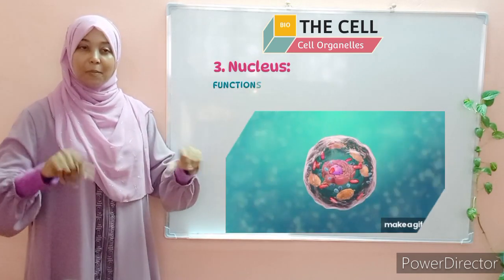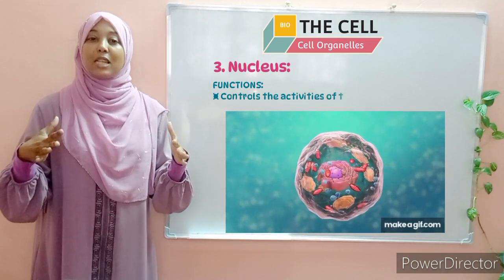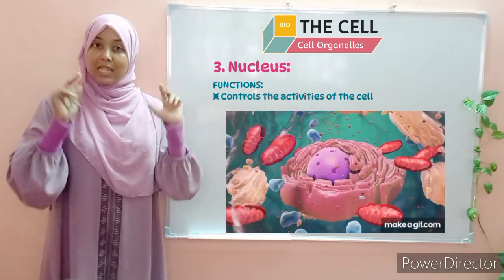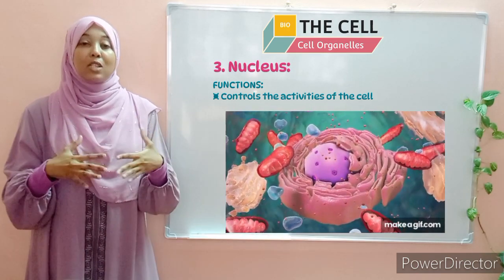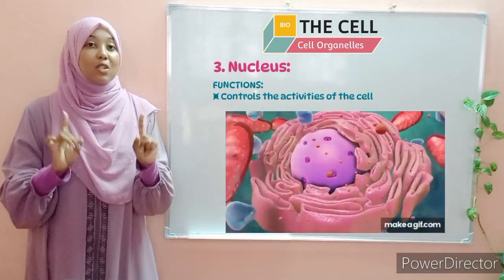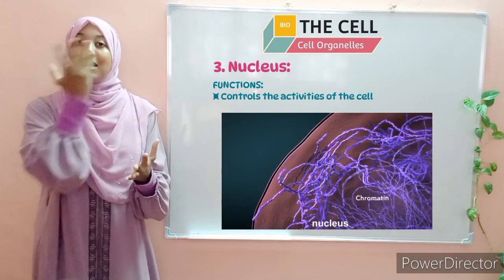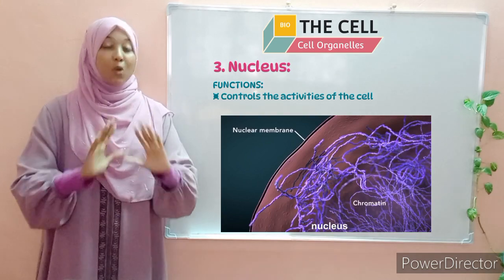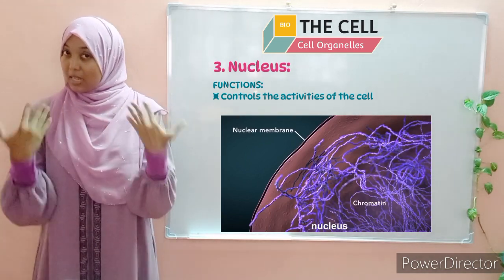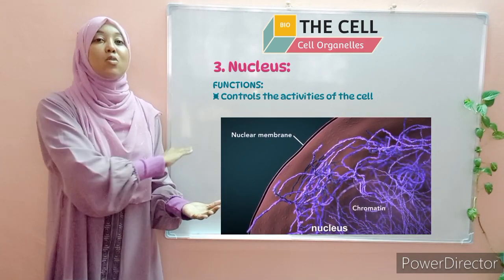Moving on to our third organelle — the nucleus. The nucleus is the control room of the cell. Whatever activities or processes happen within the cell have to be given the stamp of approval by the nucleus. So the nucleus controls any processes or activities that occur within the cell. The nucleus is surrounded by a double membrane referred to as the nuclear membrane. The nuclear membrane is also semi-permeable — that means it has pores whose function is to allow materials in and out of the nucleus.